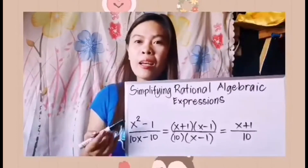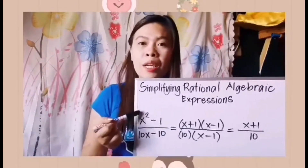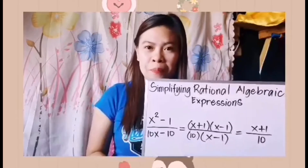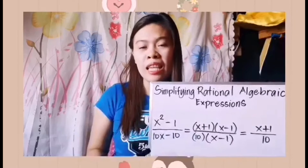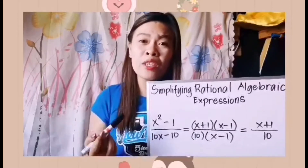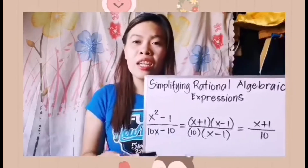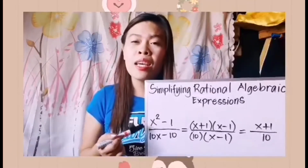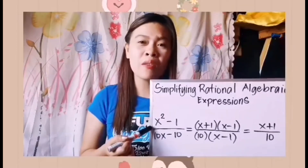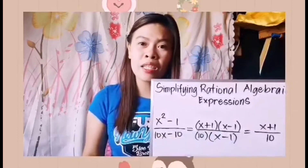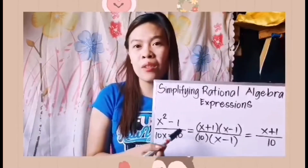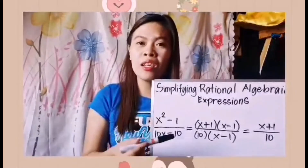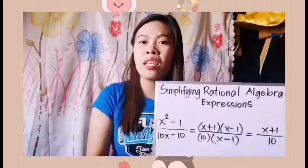For our second example, the rational algebraic expression is still a binomial over a binomial: x squared minus 1 all over 10x minus 10. First, identify which factoring techniques to apply. For the numerator x squared minus 1, this is a difference of two terms. To get the factors, the first term gives x and x, and the factors of negative 1 are positive 1 and negative 1. So the factors of this numerator are the quantity of x plus 1 and the quantity of x minus 1.